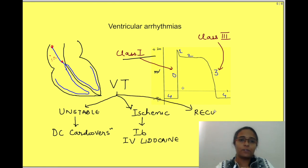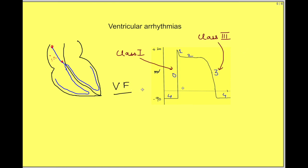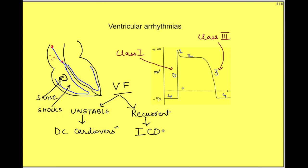For recurrent ventricular tachycardia, long-term treatment with class 3 drugs — especially amiodarone — is used. For ventricular fibrillation caused by re-entry, hemodynamically unstable cases again require electrical cardioversion. In recurrent ventricular fibrillation, an implantable cardioverter-defibrillator (ICD) is placed in the patient's heart to sense the onset of VF and deliver shocks to restore normal sinus rhythm. If the patient is not an ideal ICD candidate, class 3 drug amiodarone is used to increase the refractory period and prevent re-entry.